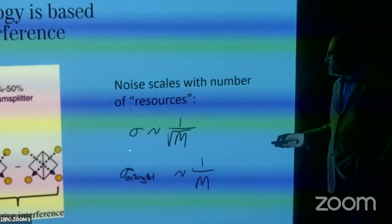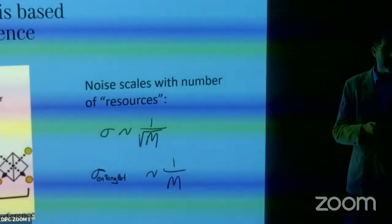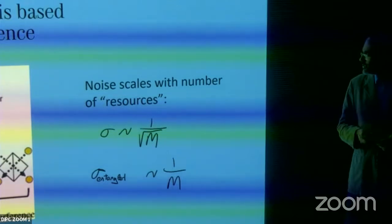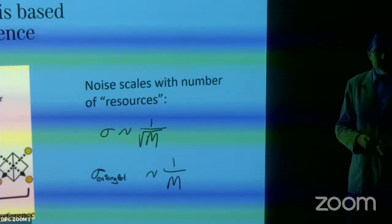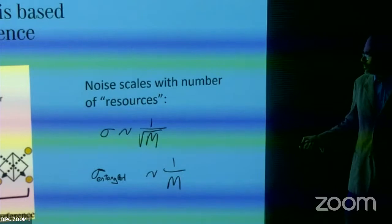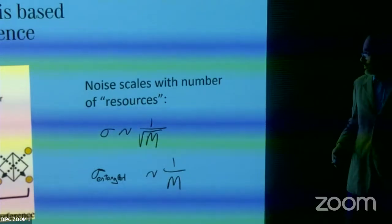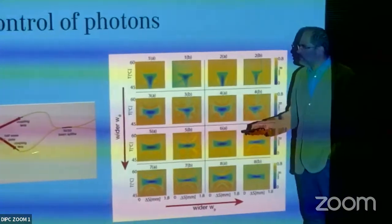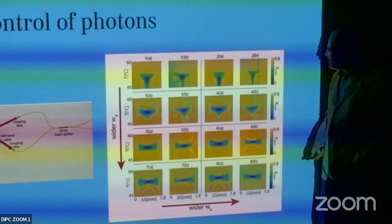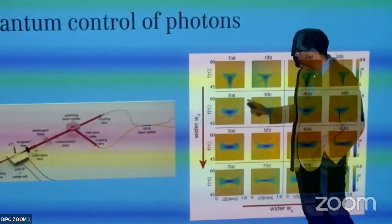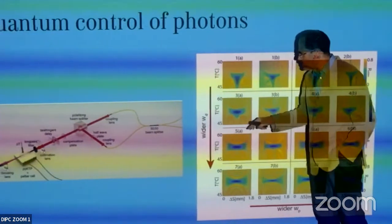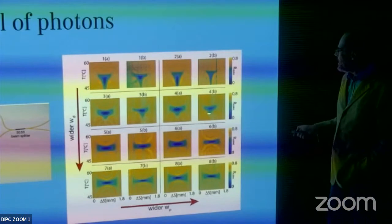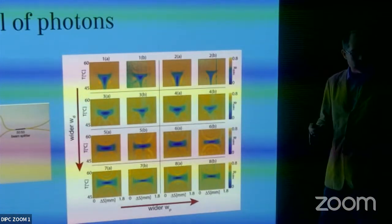I don't want you to understand all the details of the next picture — I just want to show that we have really good control of our system. This picture was taken by del Barba; the blue shows where quantum interference occurs. We change the temperature of the crystal and vary the distance between photons. The experimental and analytical results match very well — we understand our system.